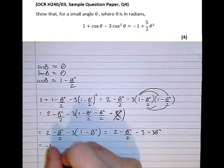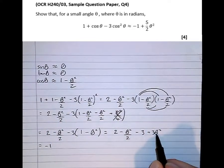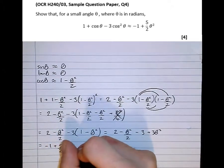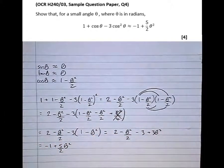And 2 minus 3 is minus 1. And 3 theta squared, take away a half theta squared, is 5 over 2 theta squared. As we were asked to show.